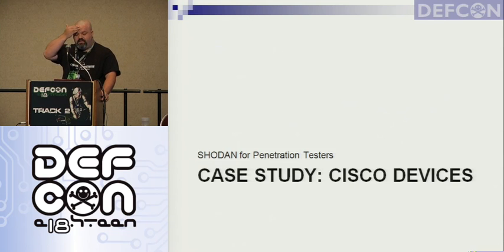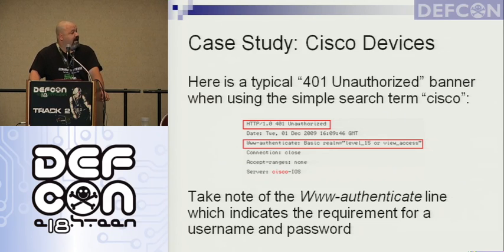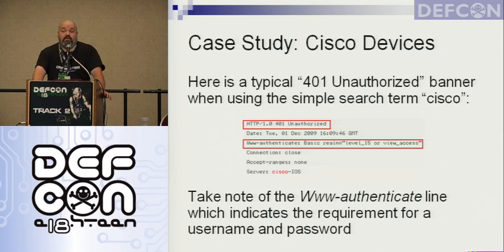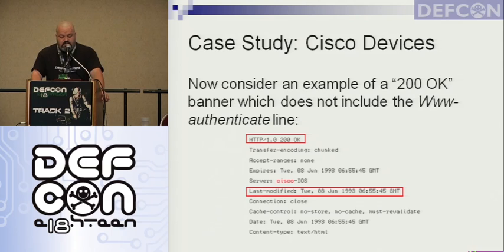The first of my four case studies is Cisco devices. Here's the first Cisco banner I found. The status code is HTTP 401 unauthorized, and we see www-authenticate, basic realm, level 15 or view access. When you click on this result you'll get a pop-up box asking for a username and password. Here's an example of a Cisco banner that is a 200 OK — it does not have a www-authenticate line, and it has a last-modified line.